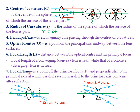The focal plane is defined as a plane through the principal focus F and perpendicular to the principal axis, at which parallel rays not parallel to the principal axis converge after refraction. You can see these particular incident rays, which are parallel to each other but not parallel to the principal axis; upon refraction, they actually converge at point F. For the case of concave lenses, the rays will always appear as if they are emanating or originating from point F.